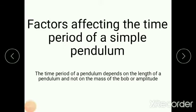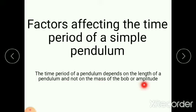Now let's see the factors affecting the time period of a simple pendulum. The time period depends on the length of the pendulum and not on the mass of the bob or the amplitude. So the factor affecting the time period is the length of the pendulum — not the mass or the amplitude.